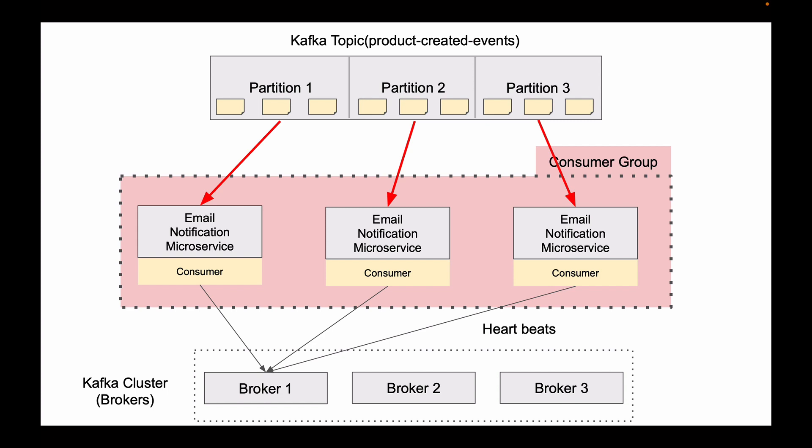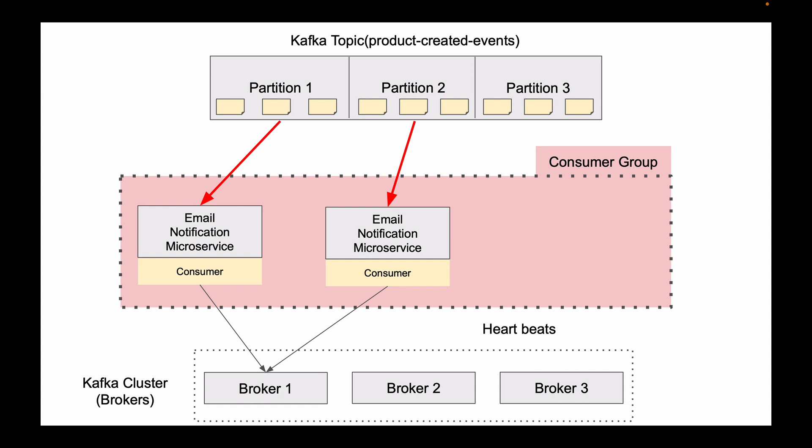If one of these Kafka consumers stops, it also stops sending heartbeat signals to the Kafka broker. When the broker notices that no heartbeats are coming from a consumer, it will remove this consumer from the consumer group and initiate rebalancing. It will check how many consumers are running and how many partitions you have in the Kafka topic, and reassign partitions to make sure each partition is read by one consumer. Remember, two consumers cannot read from the same partition. When rebalancing completes, all consumers in the group will resume consuming messages from their newly assigned partitions in parallel.